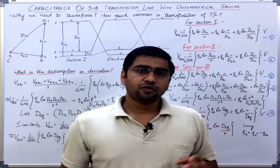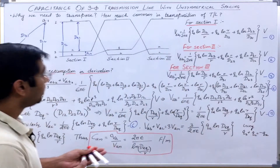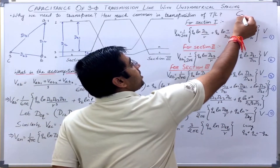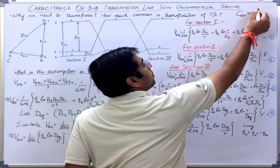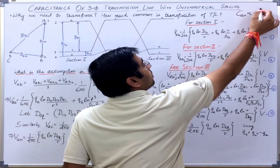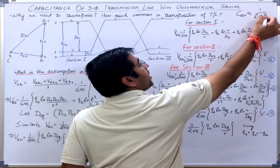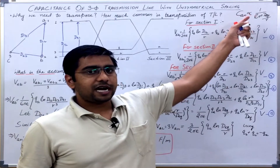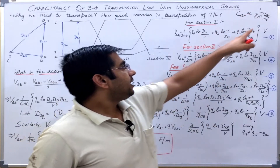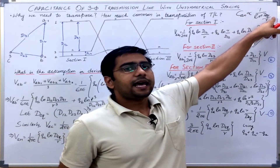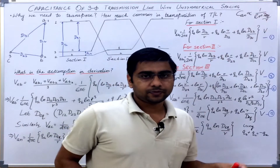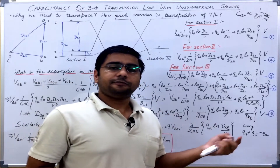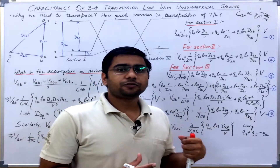Now, let us move on to the derivation. As we already know, the capacitance of a line is proportional to D-equivalent divided by R. This expression was derived earlier. So we know that it depends upon the radius as well as the spacing between the conductors. Now, if the spacing between the conductors for each phase is different, then the capacitance of each phase will be different.